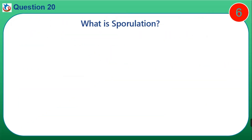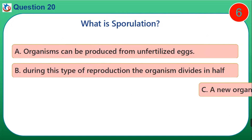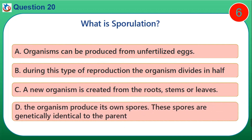Question 20. What is sporulation? A. An organism can be produced from unfertilized eggs. B. During this type of reproduction, the organism divides in half. C. A new organism is created from the roots, stems, or leaves. D. The organism produces its own spores, which are genetically identical to the parent.